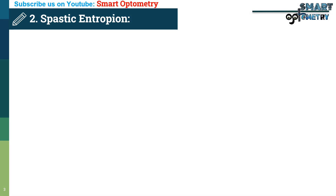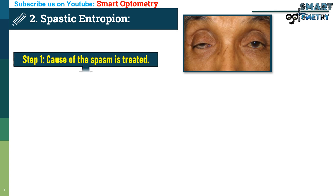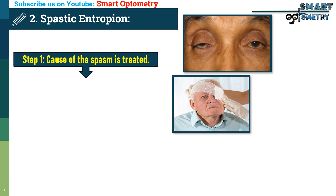Treatment of spastic entropion: Spastic entropion, often caused by muscle spasms, is addressed in several steps. Step 1: First, the cause of the spasm is treated. For instance, removing a tight ocular bandage or managing corneal conditions can alleviate the issue.